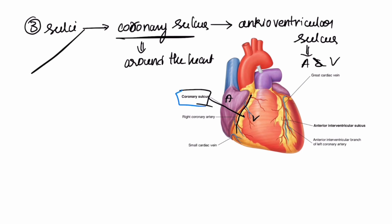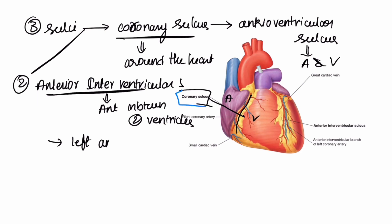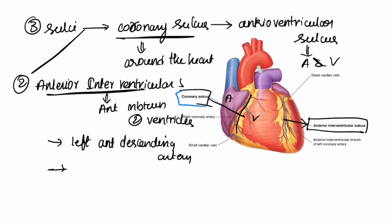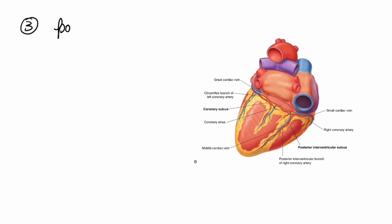The second sulcus is the anterior interventricular sulcus. This is present anteriorly in between the two ventricles. It contains the left anterior descending artery and the great cardiac vein.